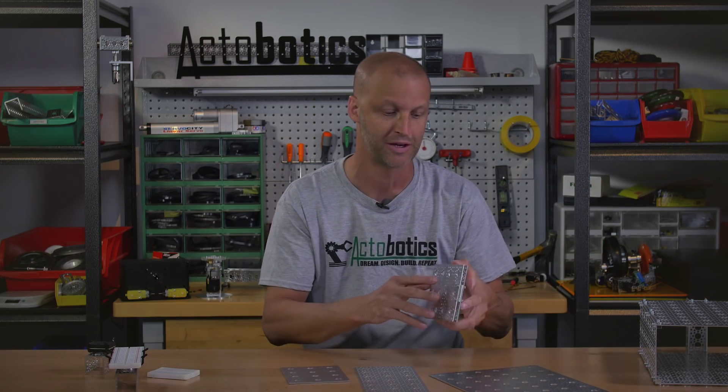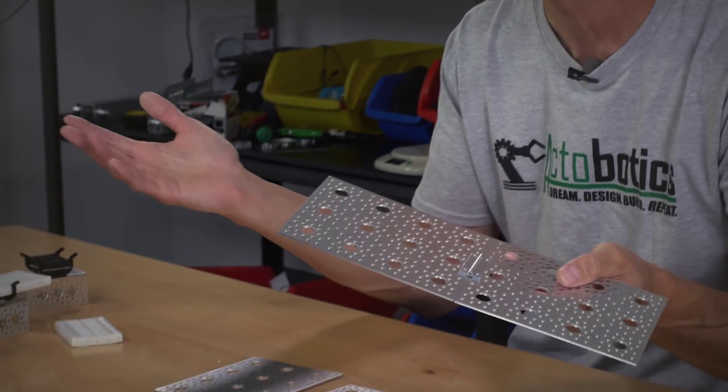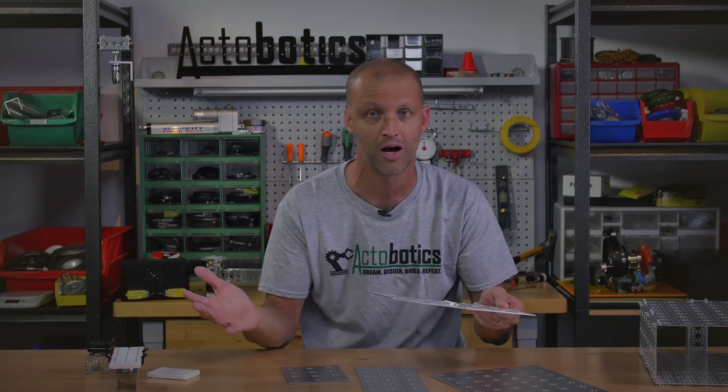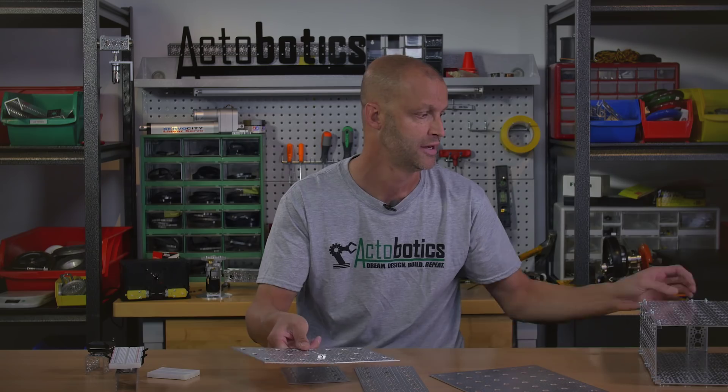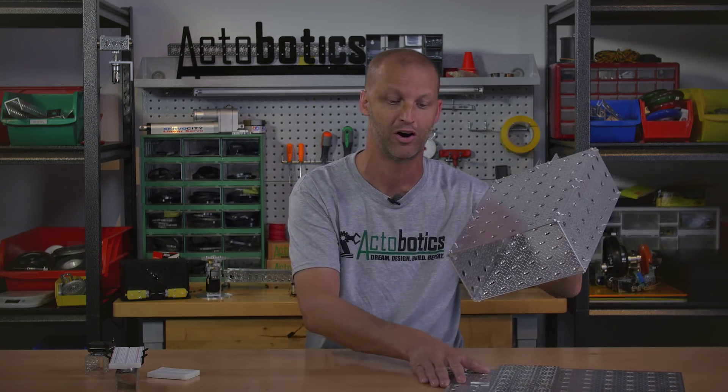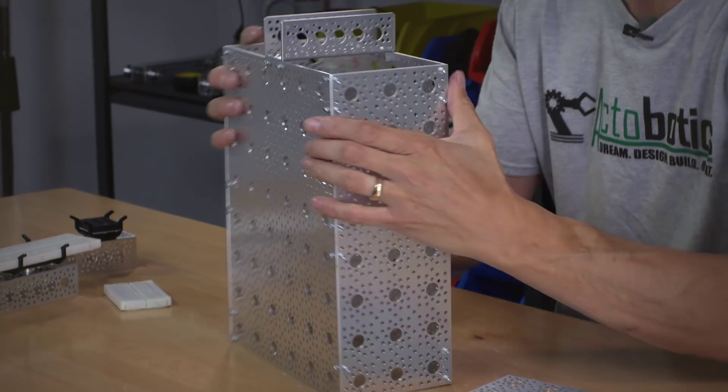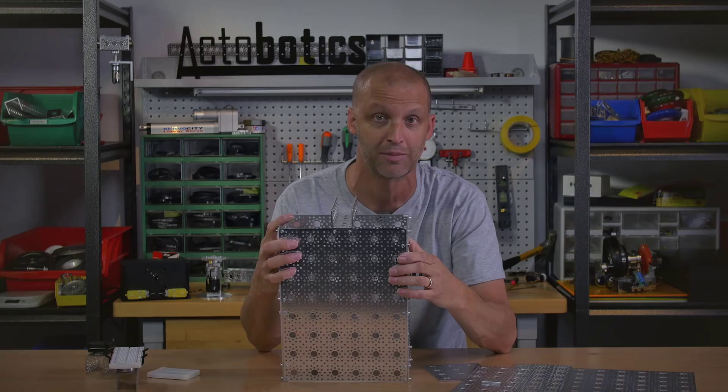So what can you do with these plates? Just virtually anything. You can attach all of our Actobotic components whether it's hinges, whether it's pillow blocks, servo mounts, you name it. You can build something relatively large. You can build your own computer tower. You can build just about any kind of project utilizing these flat plates.